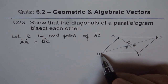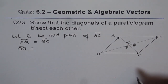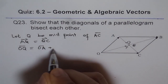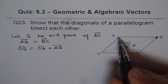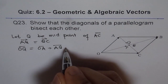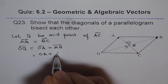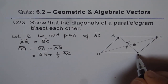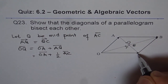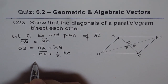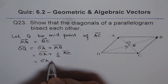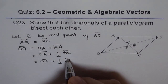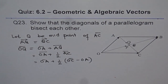Now, from here, OQ equals what? OQ equals OA plus AQ. And what is AQ? AQ is half of AC. So we can write this as OA plus half of AC — the diagonal AC. Now, what is AC? I can write AC as OC minus OA. So OQ equals OA plus half of OC minus OA.